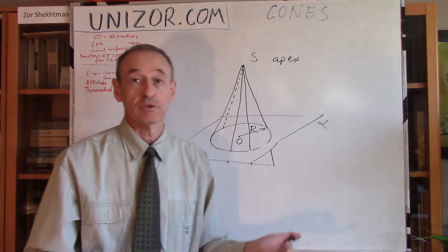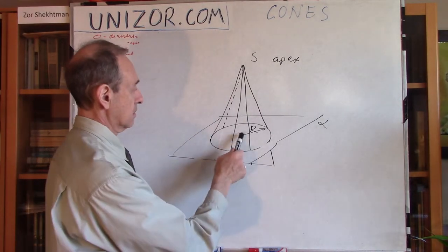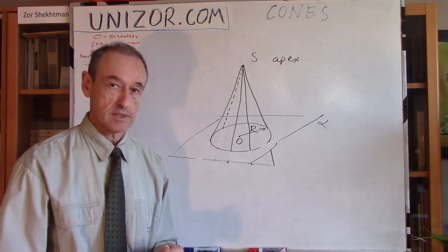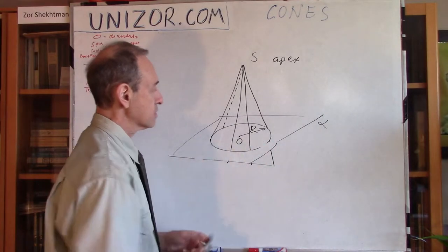Well, that's the definition. Nothing more than that. Obviously, this point O is very important. That's the center of the circle at the base. And its radius is important.